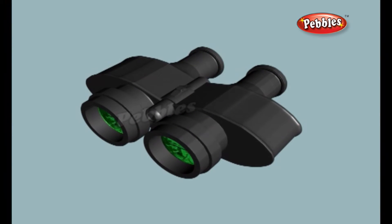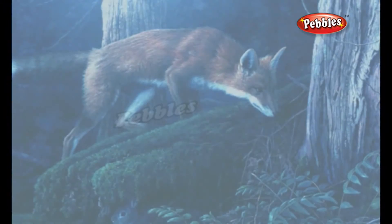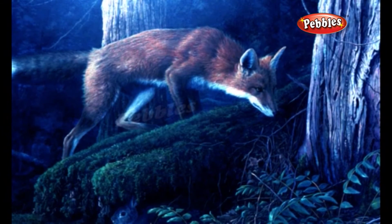Night vision goggles boost a dim, dark scene in a series of simple steps. Dim light from a night scene enters the lenses at the front.